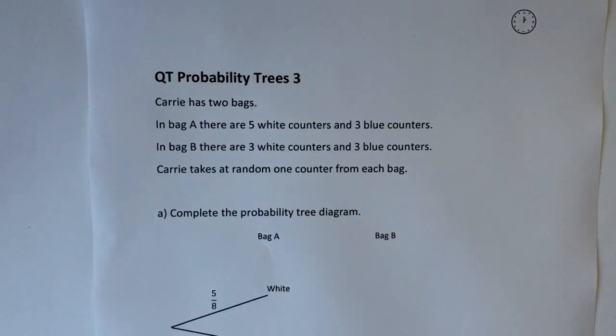Hi, in this video we're looking at probability trees. We're given the question that Carrie has two bags. In bag A there are five white counters and three blue, so there's eight counters altogether. In bag B there's six counters, of which three are white and three are blue.